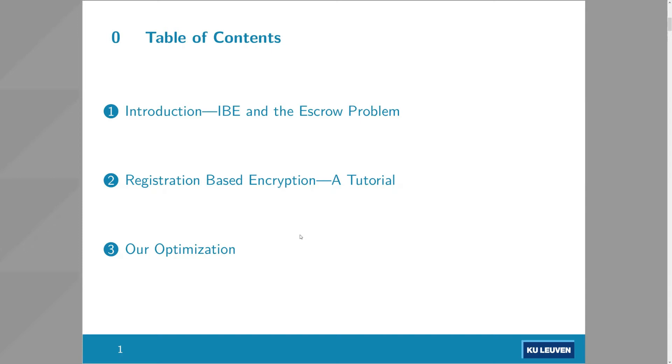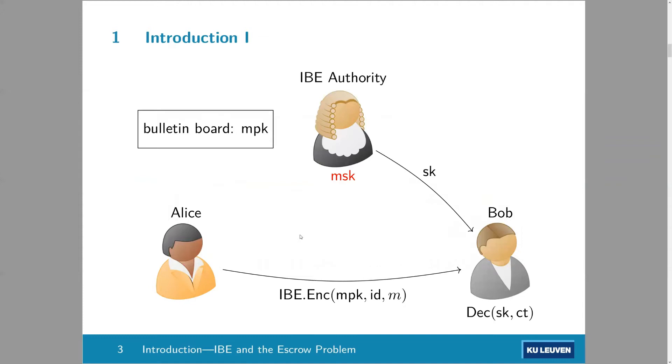Here's the agenda. I'll begin with an introduction, but actually starting with IBE, identity-based encryption, and the problems it has. And then try to motivate why registration-based encryption is important. And then I'll give you an overview of how registration-based encryption works. And finally, how some of our optimization. Okay, so let's start.